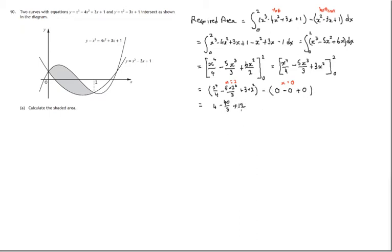So 4 plus 12 is 16 minus 40 thirds. It's useful to change the 16 into thirds, which is 48 thirds. We can check: 3 into 48 gives 16. So 48 thirds minus 40 thirds gives 8 thirds. That is the required area, so we need units squared: 8 thirds of a unit squared. That's part A.